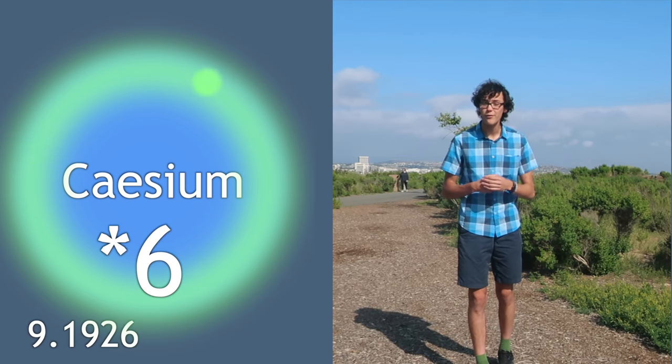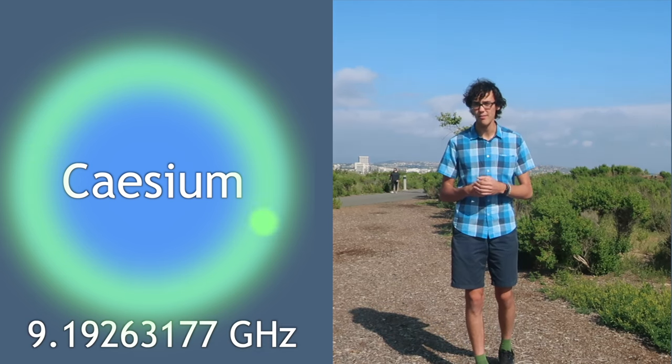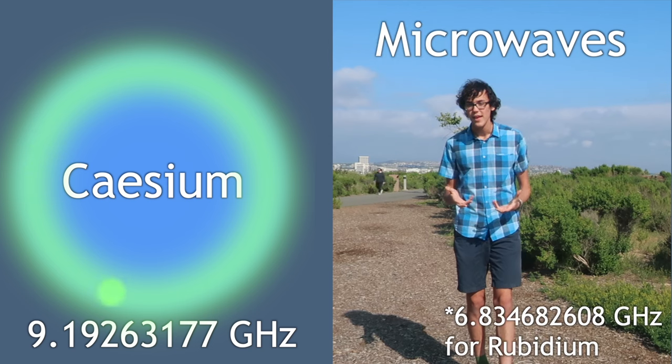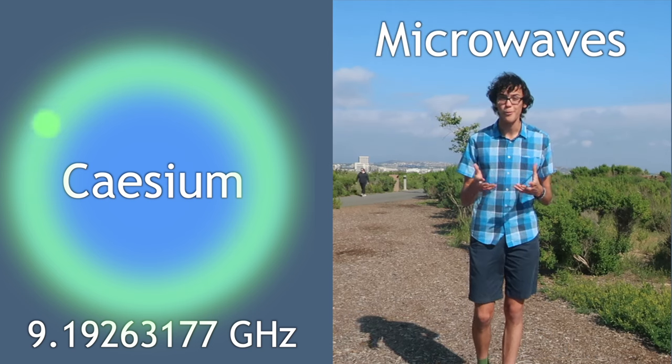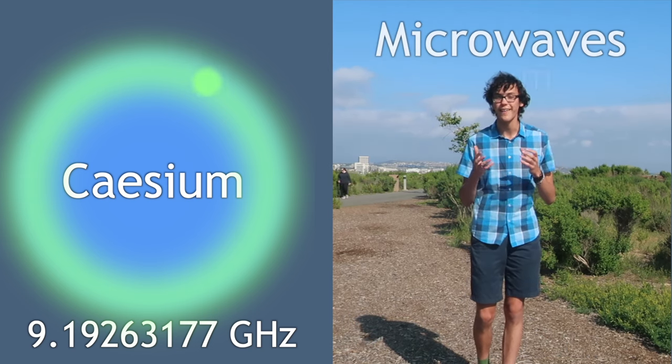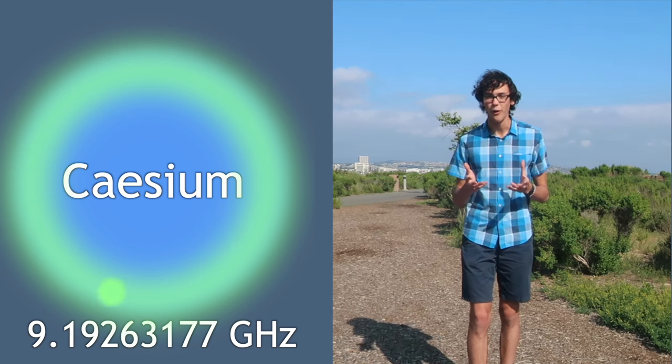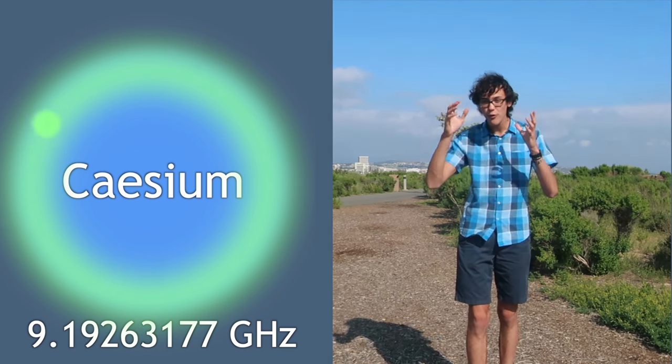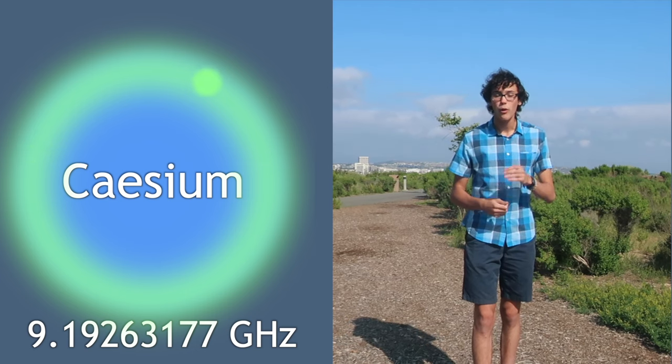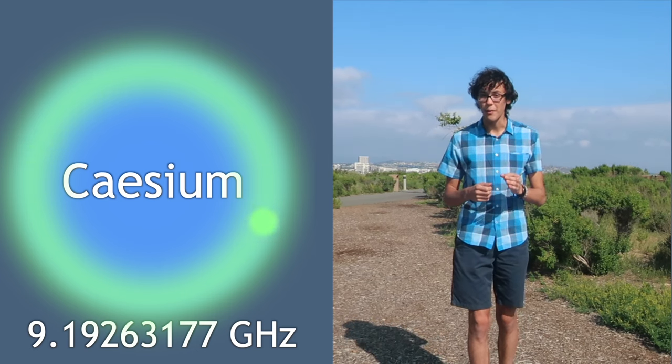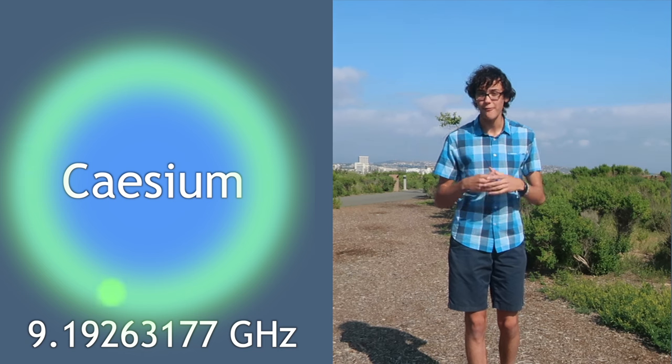9.19263177 gigahertz, also known as microwaves. If you're interested in what this means, you can look forward to a future video I'll be making on the electromagnetic spectrum. But all you need to know for the context of this video is that that electron that hovers in the outer reaches of the atom will absorb, and will only absorb, a very specific frequency of microwaves.